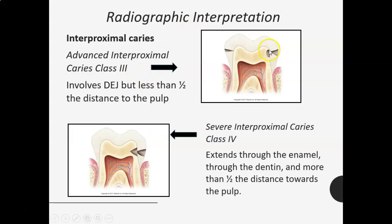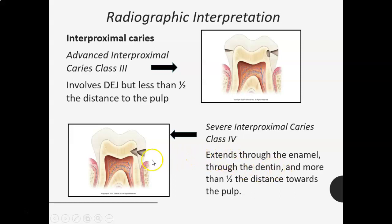Interproximal caries Class 3 — advanced interproximal caries — is caries that has gotten to the DEJ, the dentin-enamel junction, and into the dentin but less than halfway to the pulp. It depends on location because the distance to the pulp in the dentin varies. Class 4 — severe interproximal caries — extends through the enamel, through the dentin, and is more than halfway to the pulp.